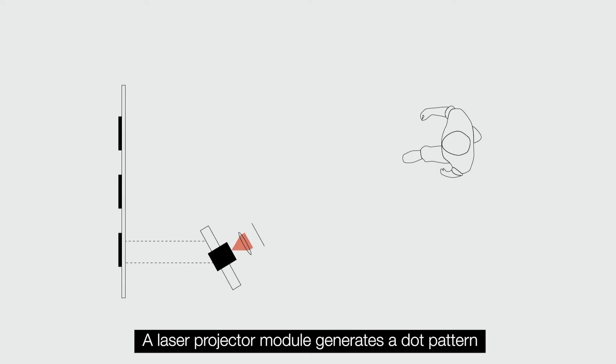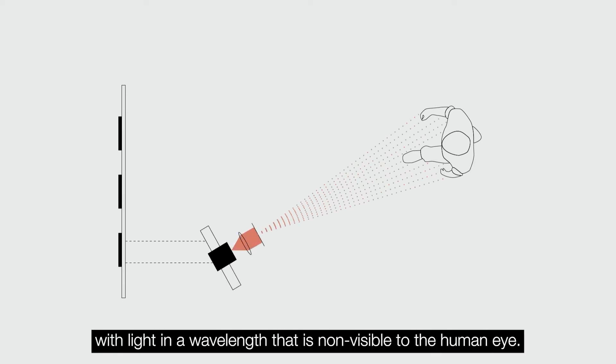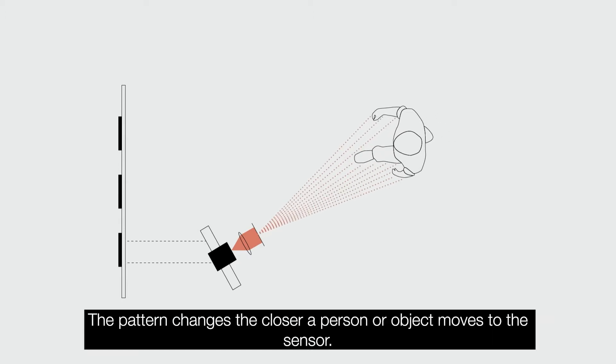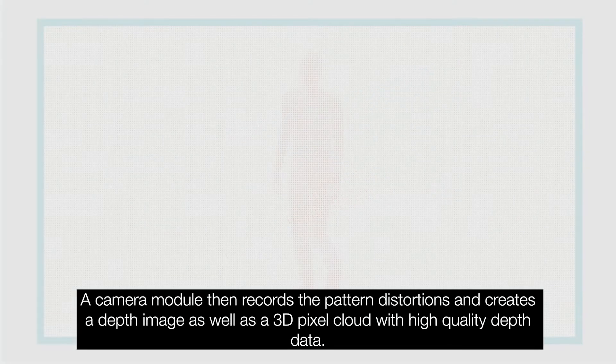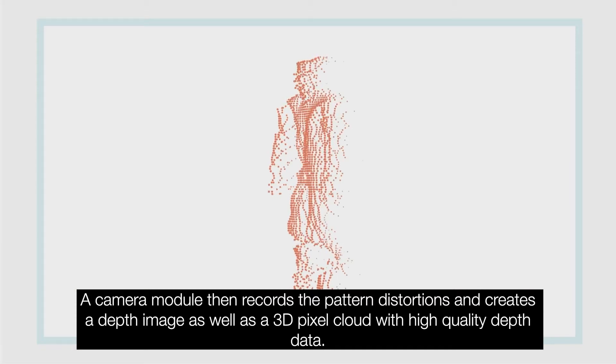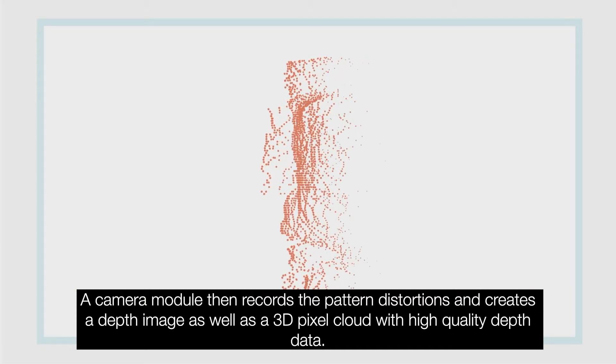A light projector module generates a dot pattern with light in a wavelength that is non-visible to the human eye. The pattern changes the closer a person or object moves to the sensor. A camera module then records the pattern distortions and creates a depth image as well as a 3D pixel cloud with high quality depth data.